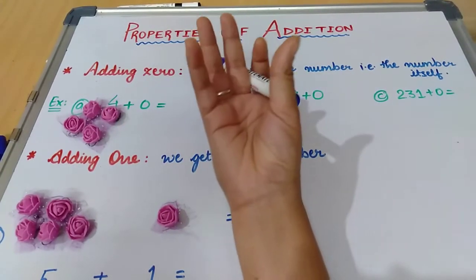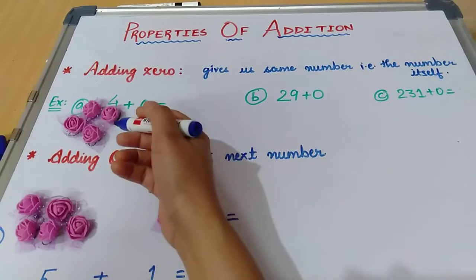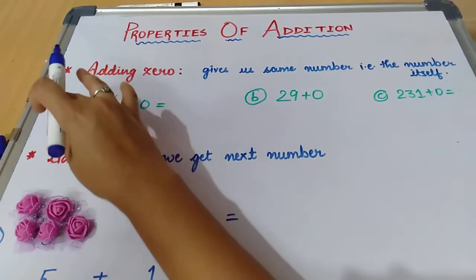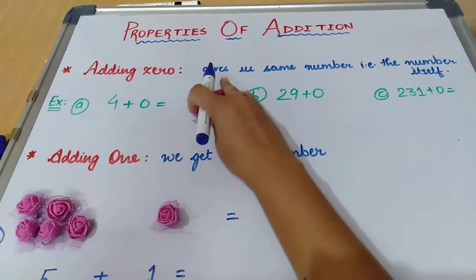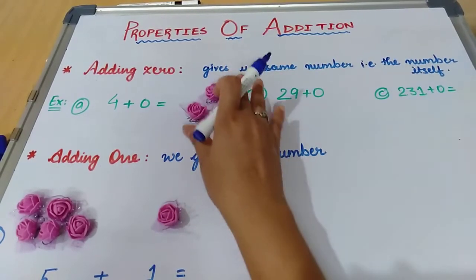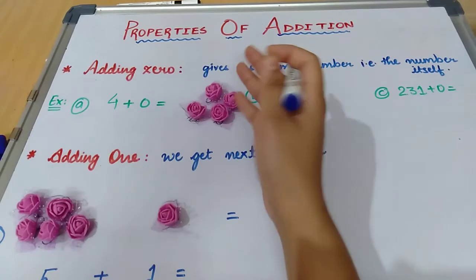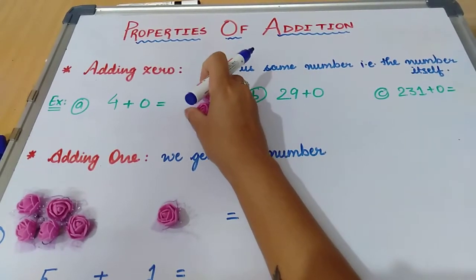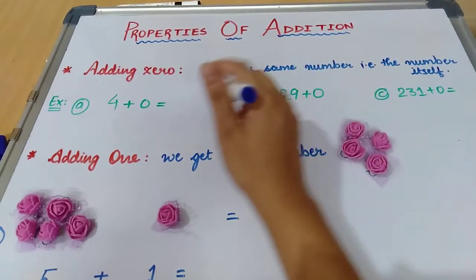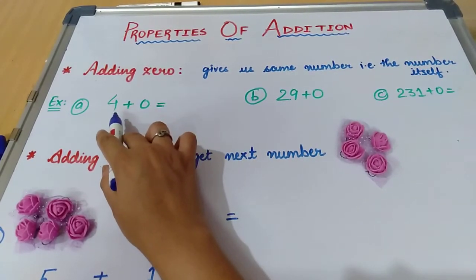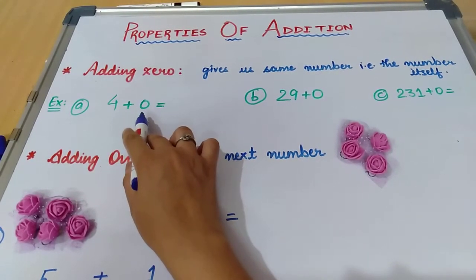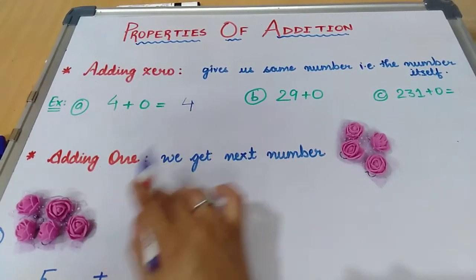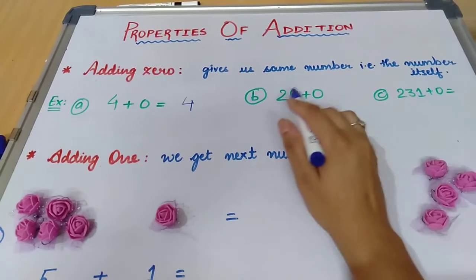In these four flowers I add nothing. What I will get? I will get same four flowers na, kyunki four flowers mein meinne zero add kiya matlab meinne kuch bhi add nahi kiya toh mujhe same four flowers milingi. That's why we get the same number. Here the number is given four and we are adding zero to it and we will get four itself. Similarly if I add zero to twenty nine, what I will get? I will get the same number.